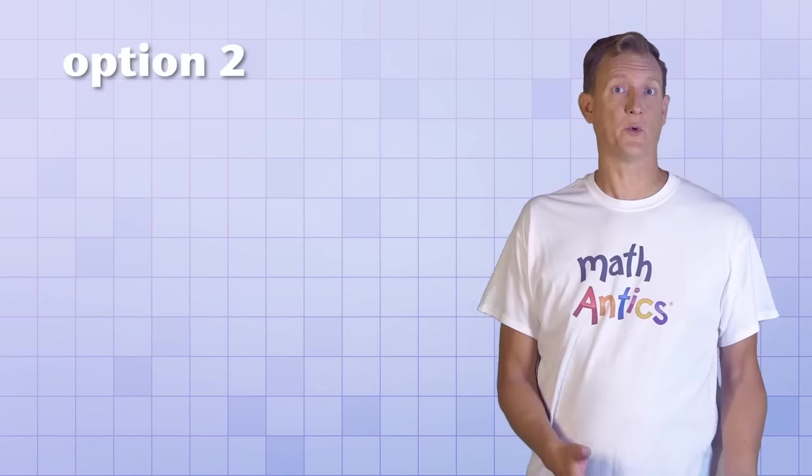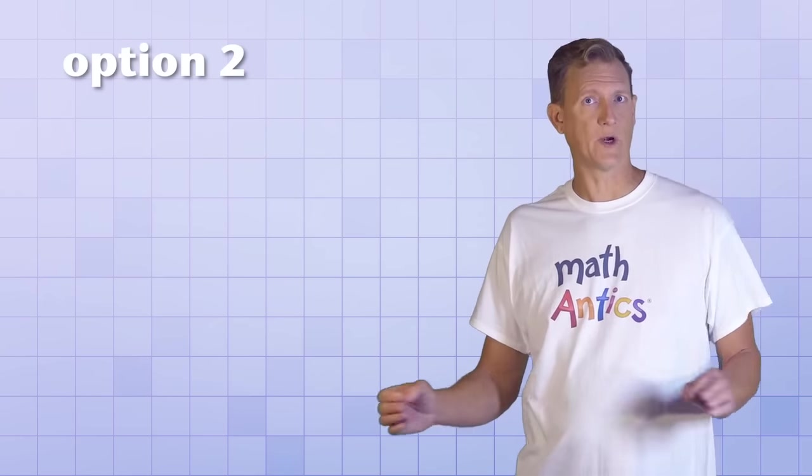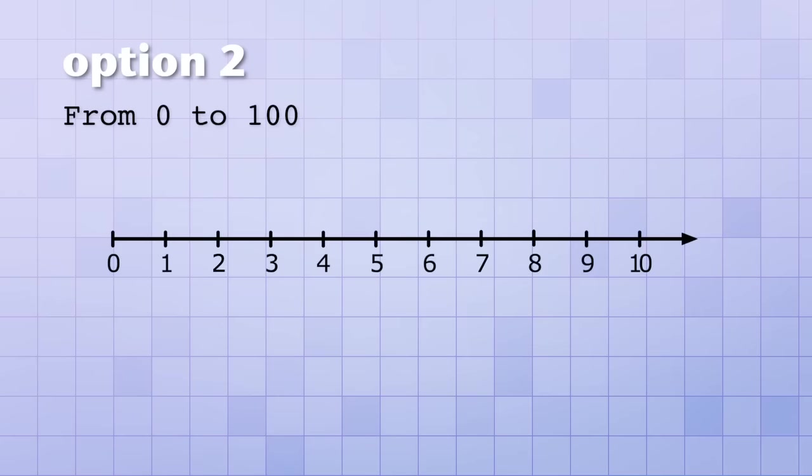The second option would work for situations where we need to use the entire range from 0 to 100. In that case, we could simply leave out most of the digit marks on the number line and just show a mark for each multiple of 10, like 10, 20, 30, 40, and so on.